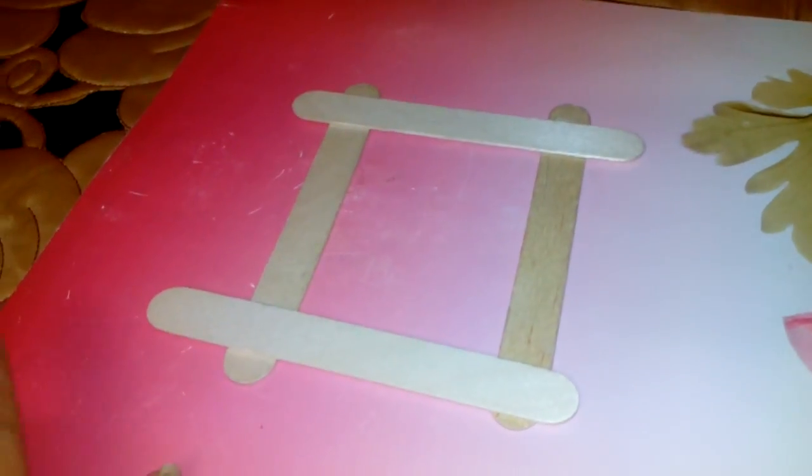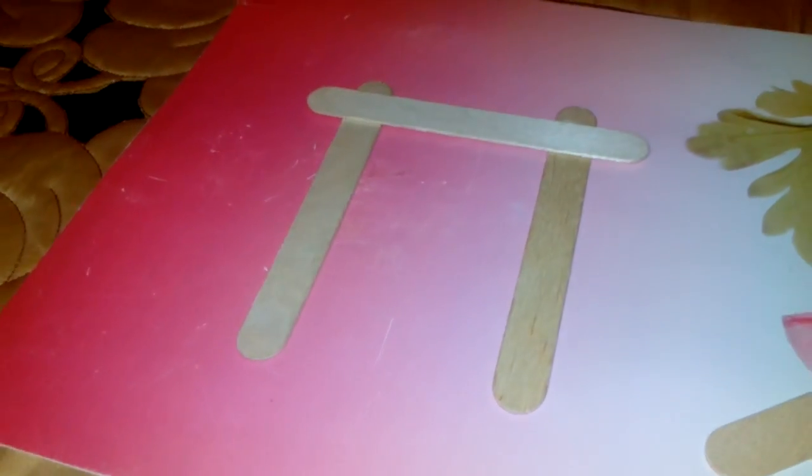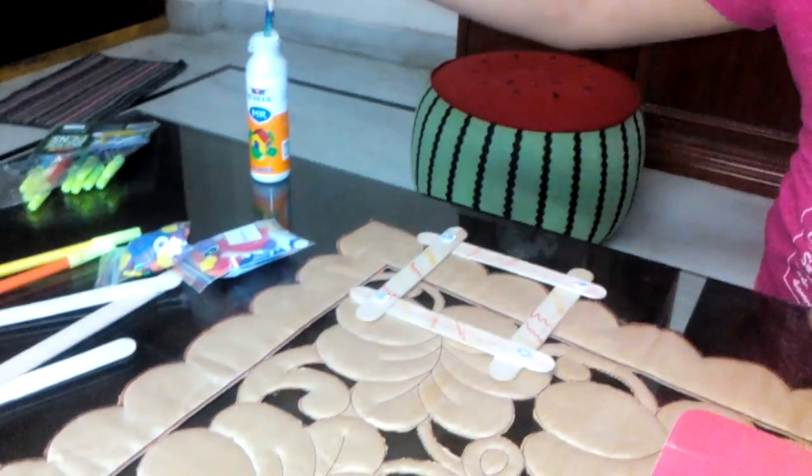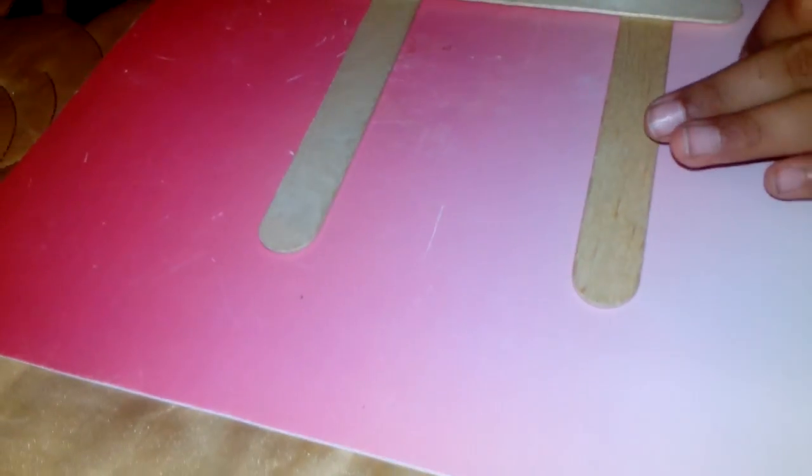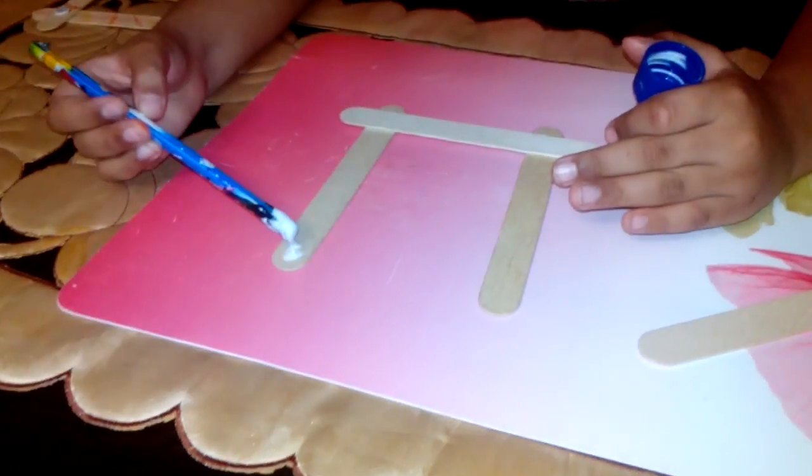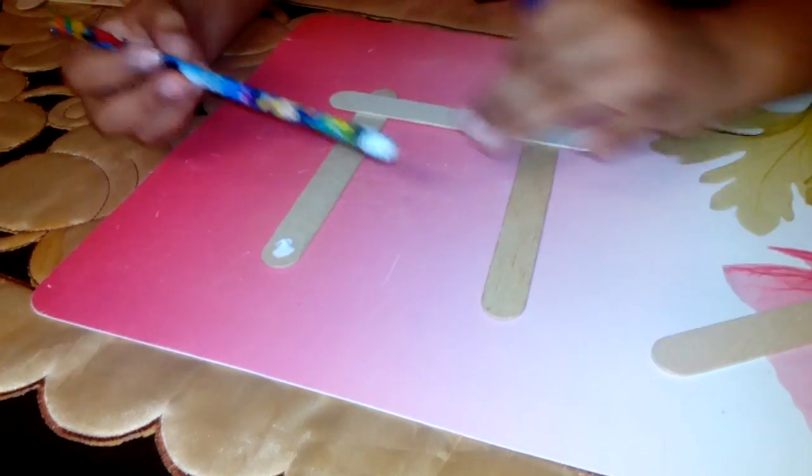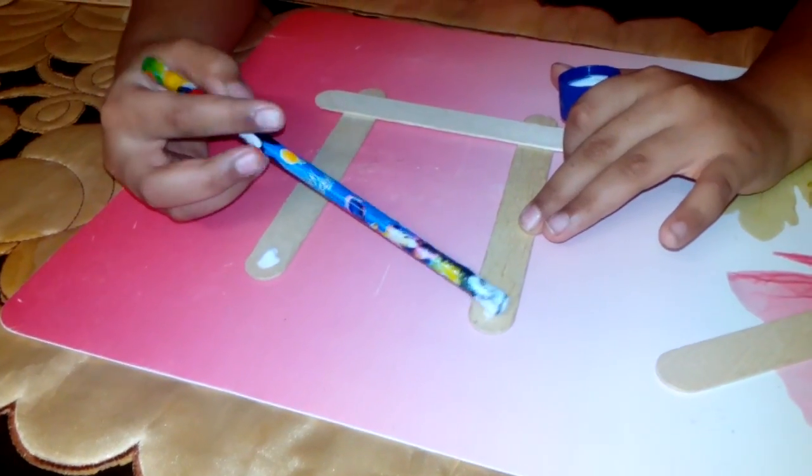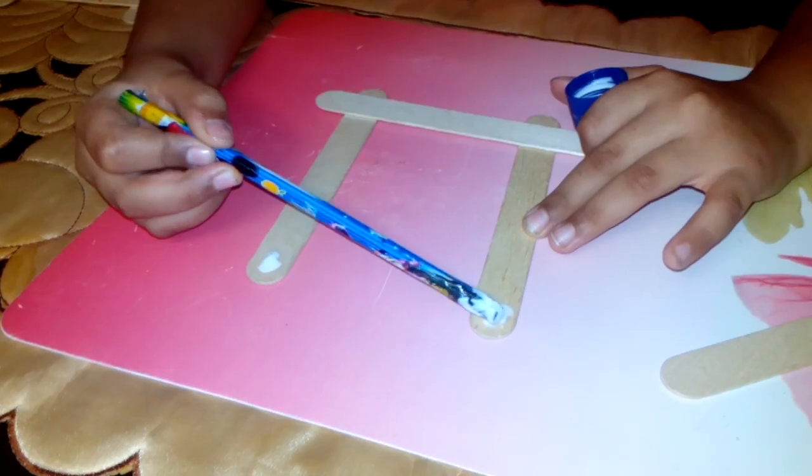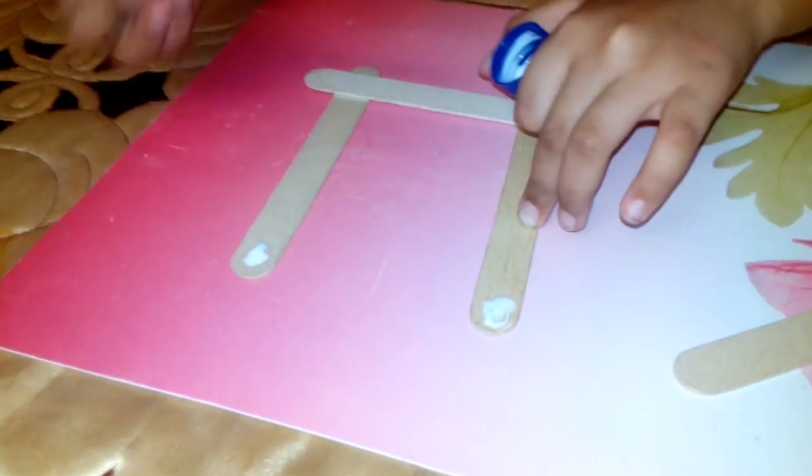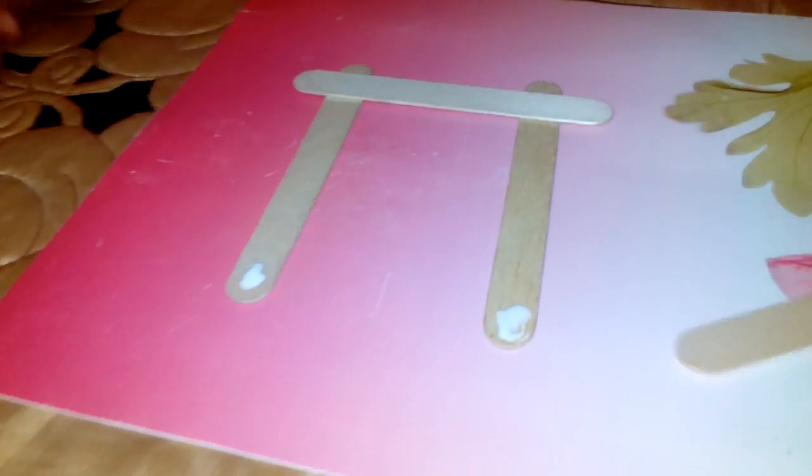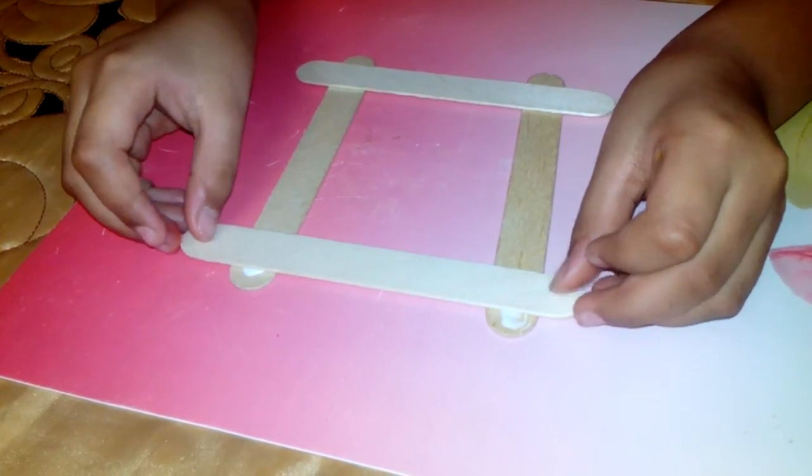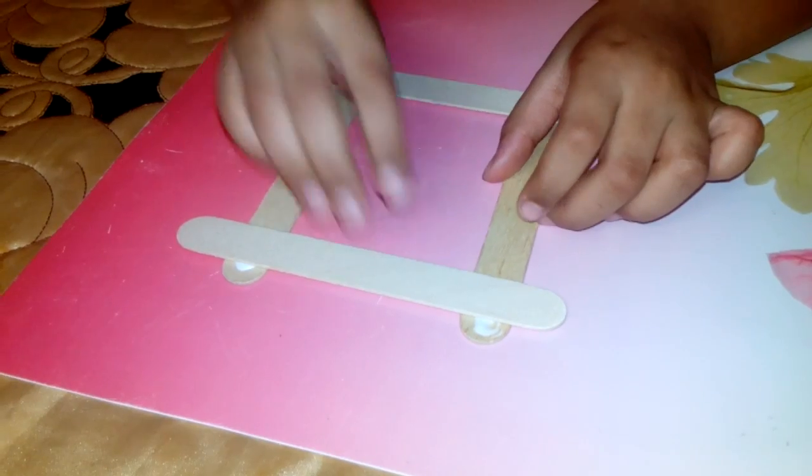And now I'm going to put glue on the sides of the ice cream sticks. Like this. So let me put glue here now. Neat and nice. And now I'm going to place the ice cream stick here.